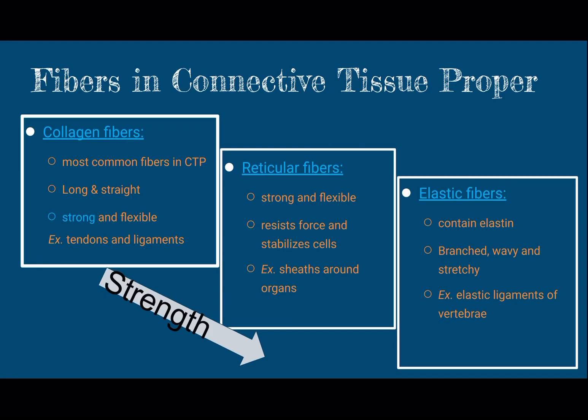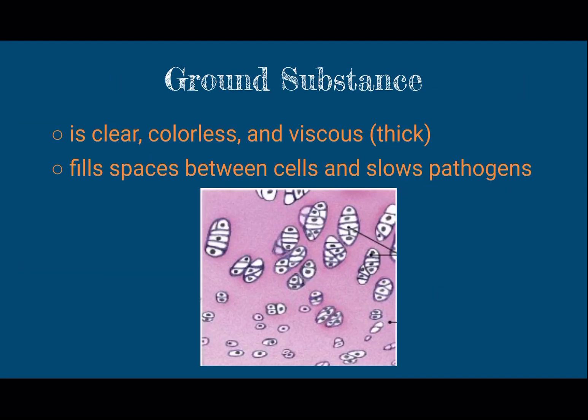What about the fibers? Remember, it's all about the cells, the fibers, and the ground substance that makes up connective tissue. There are three types of fibers: collagen, reticular, and elastic. The strongest one is collagen, and then they decrease in strength as we go down, so elastic would be the stretchiest. If you read their names and what they do and where they work, you can see that form continues to follow function. The ground substance is what's in the back — it could be clear, colorless, and viscous, meaning thick or fluid-like, sometimes even gel-like, and that's what fills the spaces.